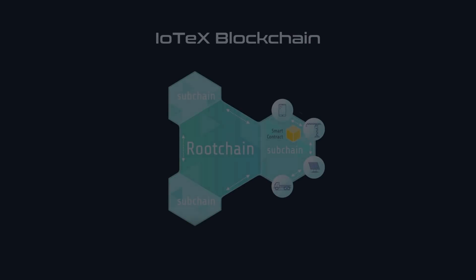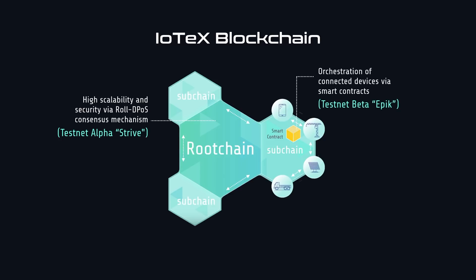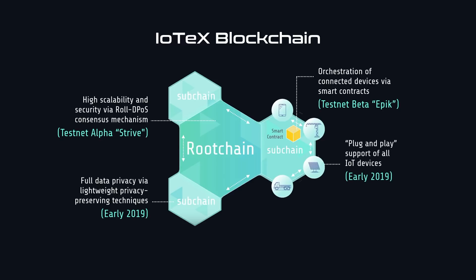Since the beginning of IoTeX, our goal has been to build a privacy-centric blockchain that is fast, flexible, and IoT-friendly. In Strive, we introduced RoeDepose, our in-house consensus mechanism. In Epic, we added smart contracts and wallet. Early next year, we will add privacy and seamless device integration.